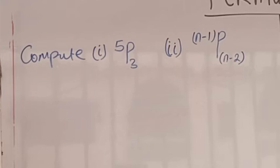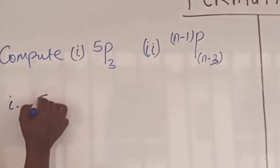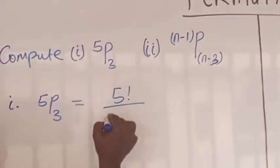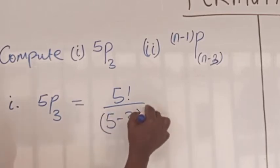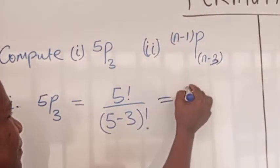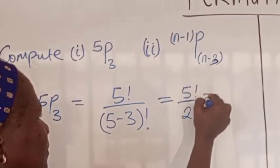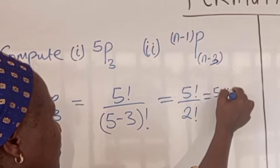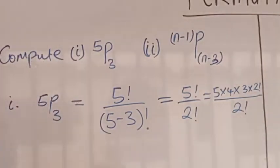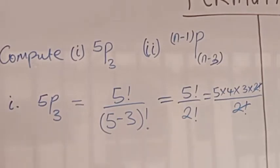Compute P(5,3). Five permutation three equals five factorial over five minus three factorial, which is five factorial over two factorial. Expanding: five times four times three times two factorial, over two factorial. The two factorials cancel and we have five times four times three equals 60.